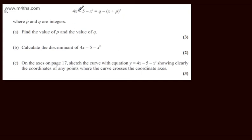In question 8 we're given 4x minus 5 minus x squared is equal to q minus the quantity x plus p all squared, where p and q are integers. In part A we're asked to find the value of p and the value of q. The question carries three marks. What we're looking to do here is complete the square.